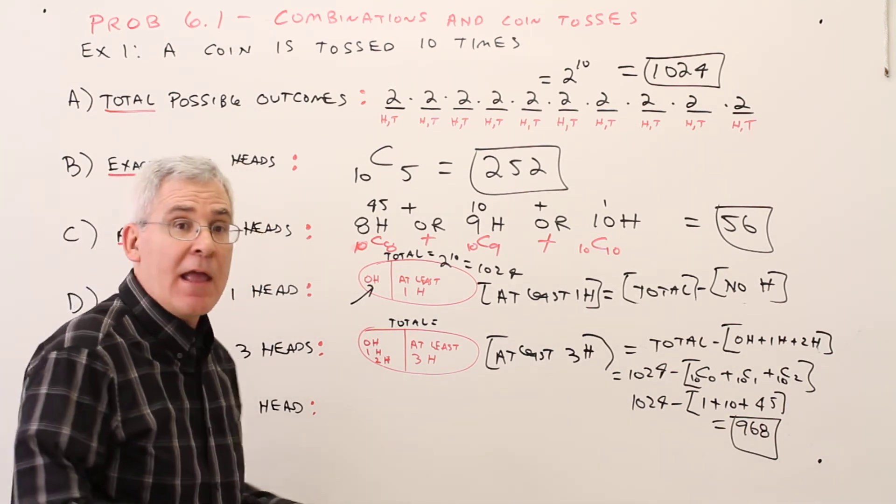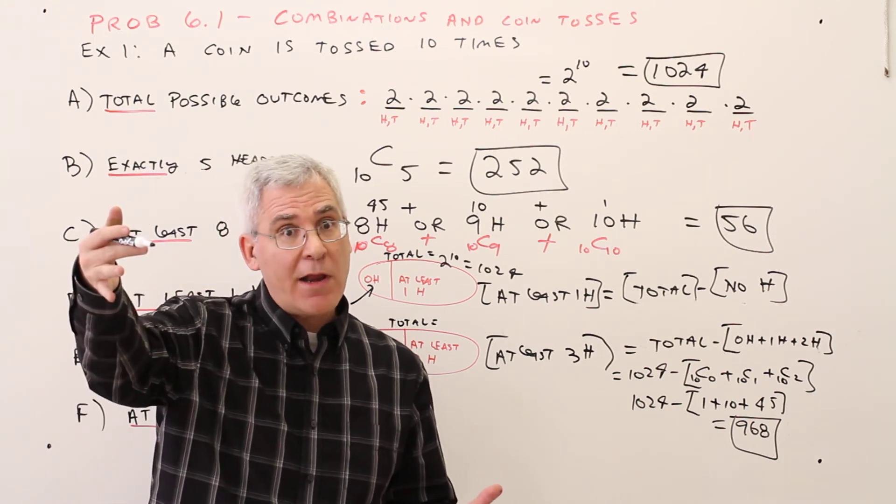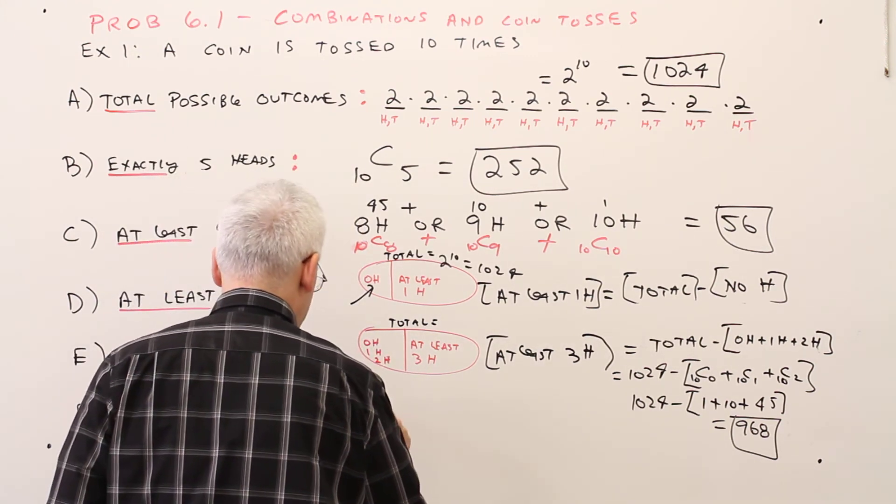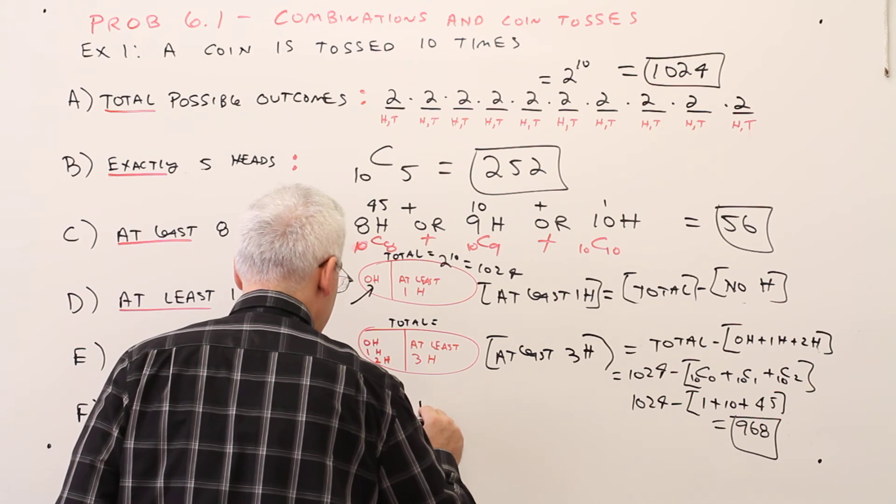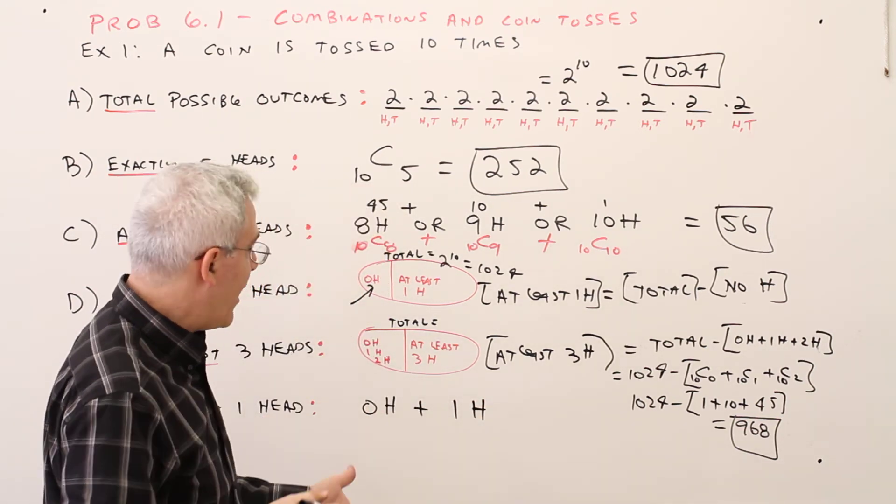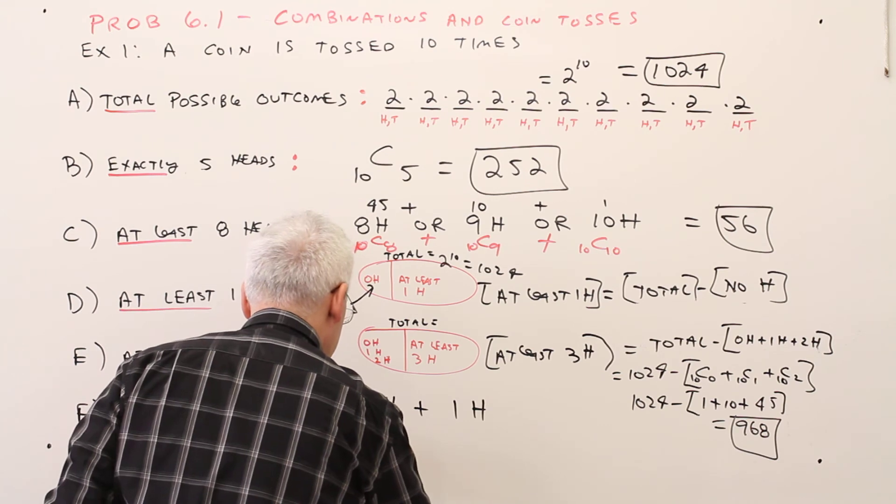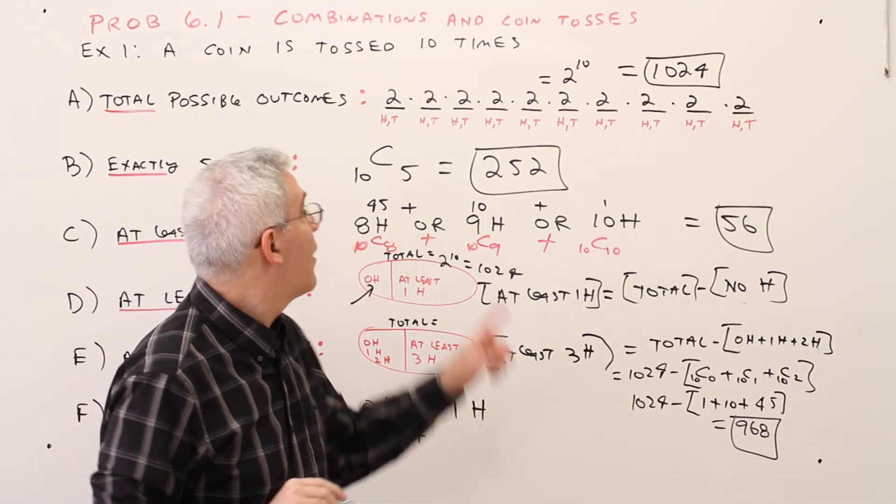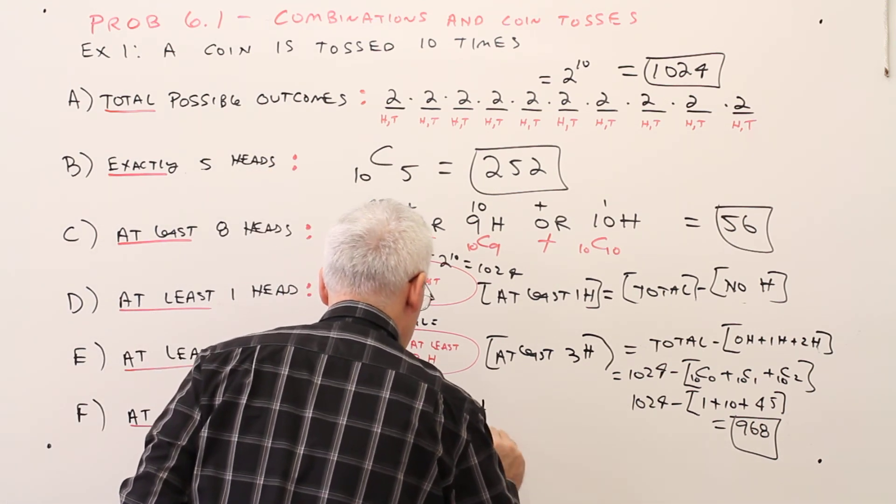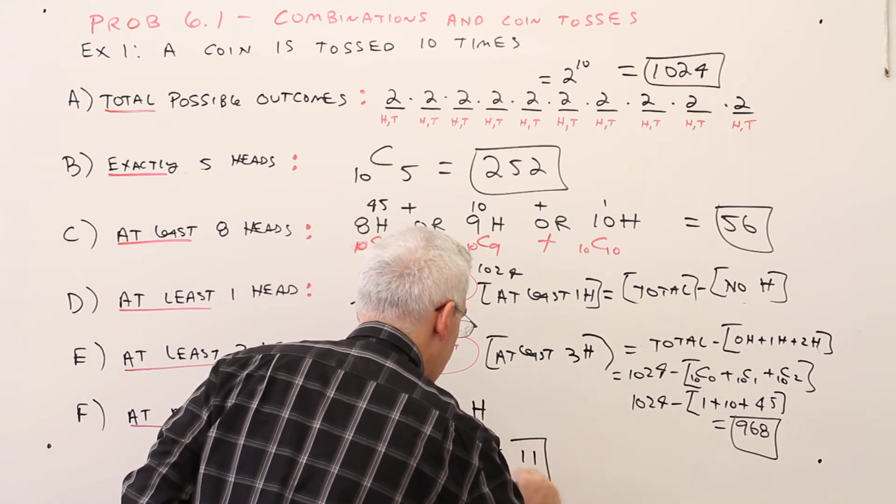Last one, at most 1 heads. Well at most 1 heads means 1 heads or fewer. Don't forget there's always the possibility of 0. So at most 1 heads is the same as 0 heads plus 1 heads. So again, for 0 heads out of the 10 choose 0 to be heads. For the 1 heads, out of the 10 choose 1 to be heads. So that's going to be 1 plus 10, and that would be 11.